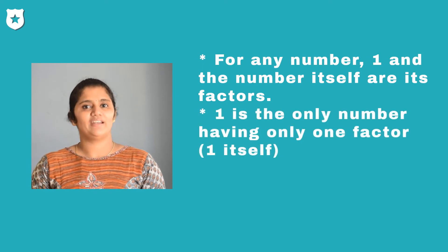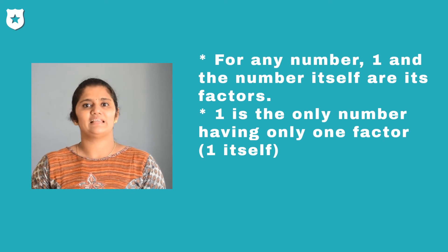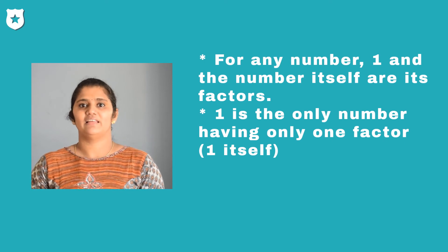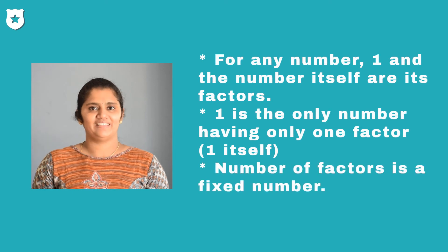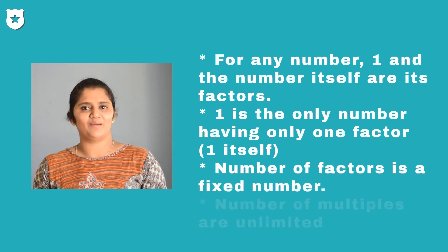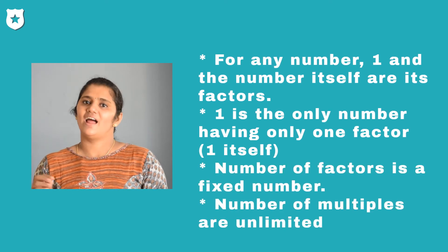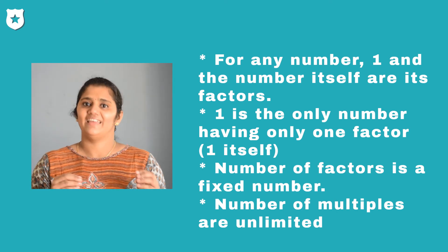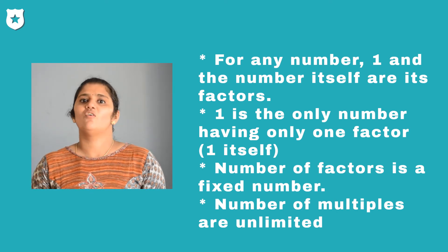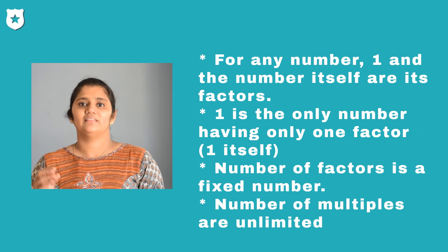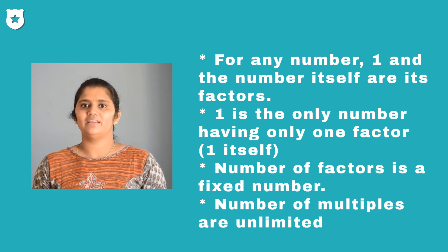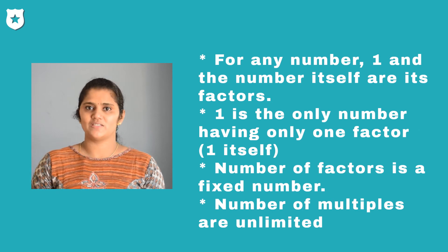Also 1 is the only number which has exactly one factor, that is a unique number. Factors are fixed for any given number and multiples are unlimited. In other words, we can say a factor is a number that leaves no remainder after it divides the specific number.